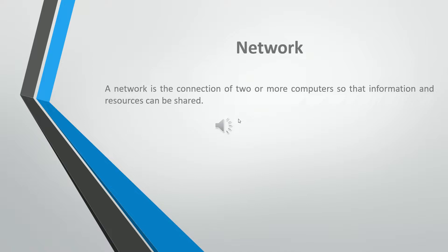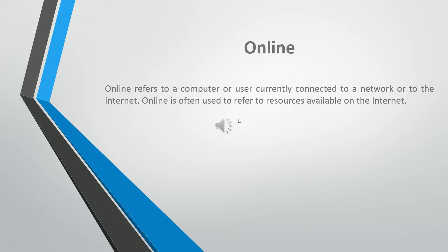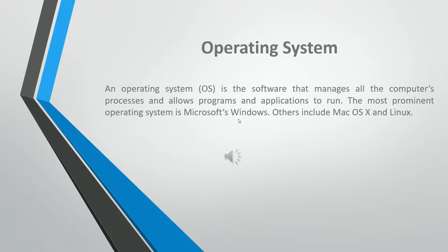The network is the connection of two or more computers so that information and resources can be shared. Online refers to a computer or user currently connected to a network or to the internet. Online is often used to refer to resources available on the internet. An operating system (OS) is the software that manages all the computer's processes and allows programs and applications to run. The most prominent operating system is Microsoft's Windows. Others include Mac OS X and Linux.